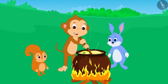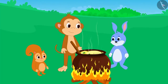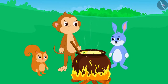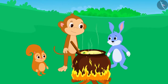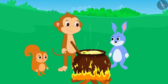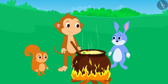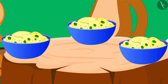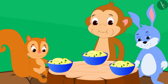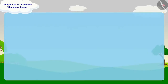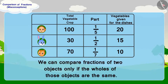Babban explained this to Banni and Chanda in the same way and both of them understood. But Babban said that he does not want the biggest share. The three together happily shared equal portions of the dish and ate it with fun. Children, keep in mind that we can compare fractions of two objects only if the wholes of those objects are the same.